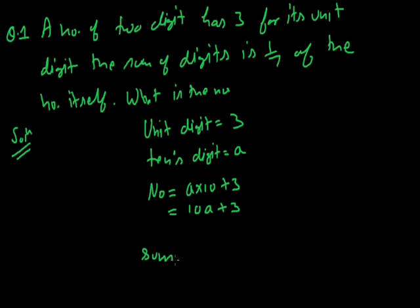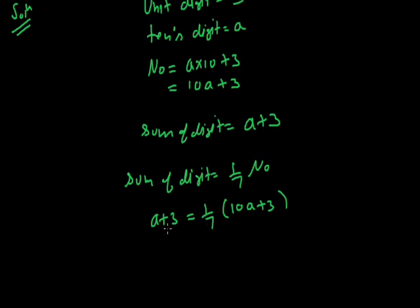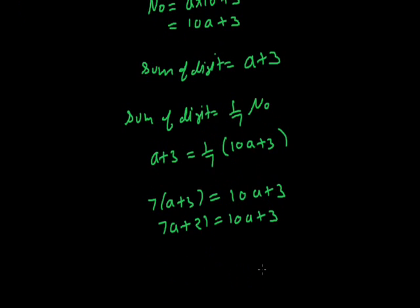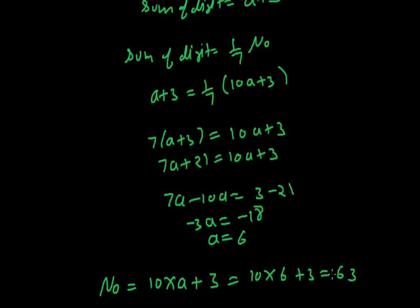So what should be the sum of the digits? The unit digit is 3 and the tens digit is A, so the digit sum is A plus 3. In the question it is given that the sum of the digits is 1 by 7 of the number. So: A plus 3 equals one-seventh of (10A plus 3). Cross multiplying: 7(A plus 3) equals 10A plus 3, that is 7A plus 21 equals 10A plus 3. After rearranging: 7A minus 10A equals 3 minus 21, so minus 3A equals minus 18, giving A equals 6. So our number is 10 into 6 plus 3, that is 63. This is your number.